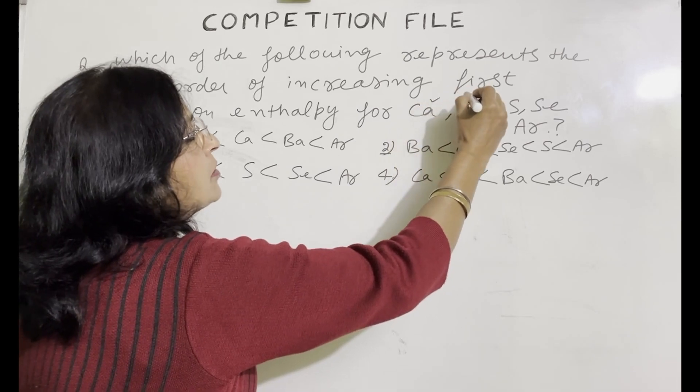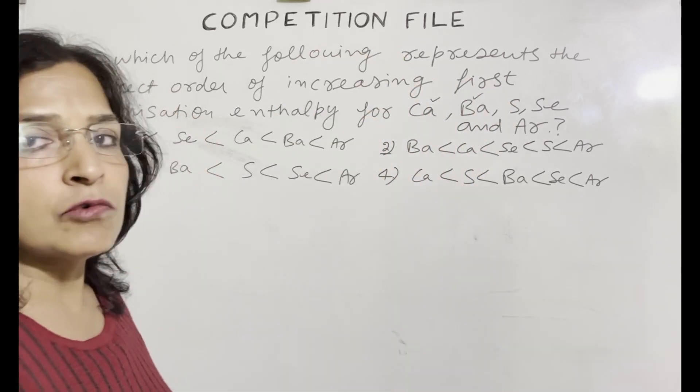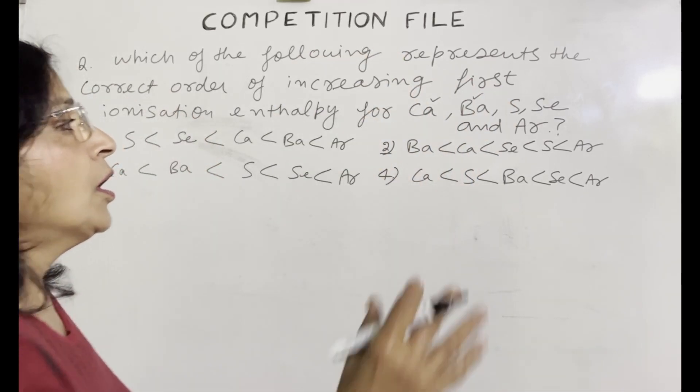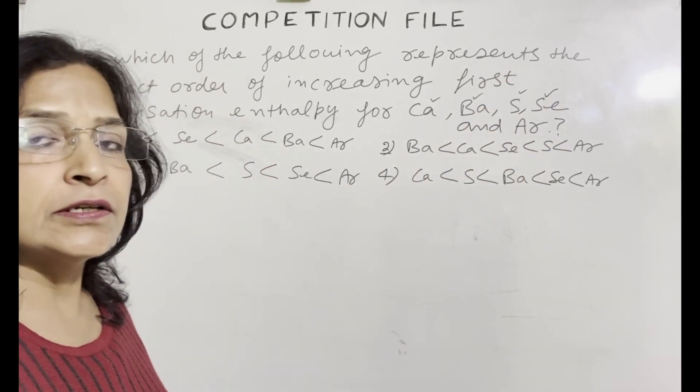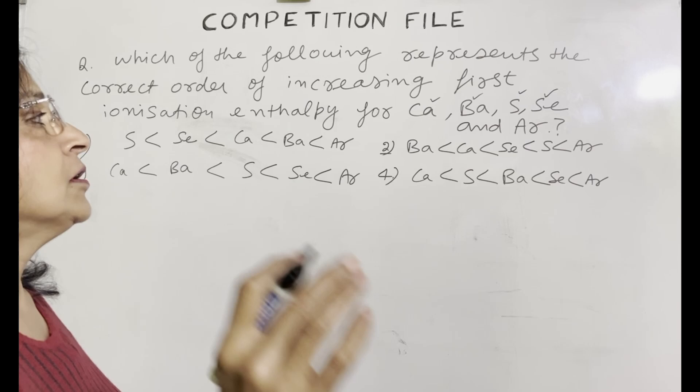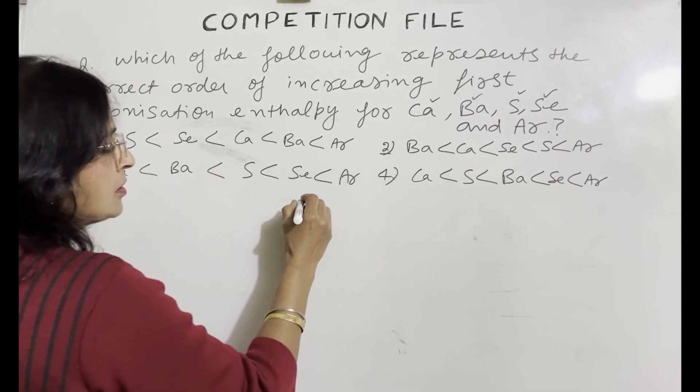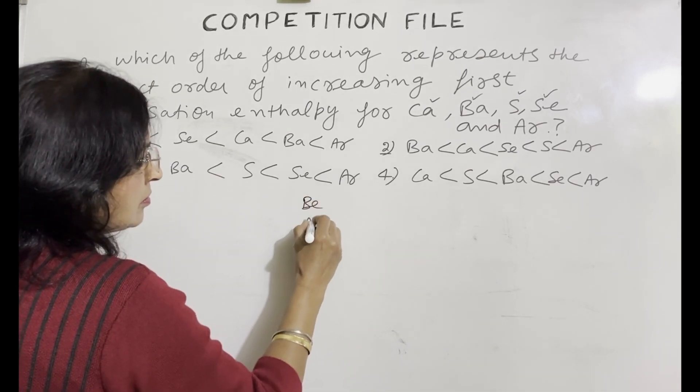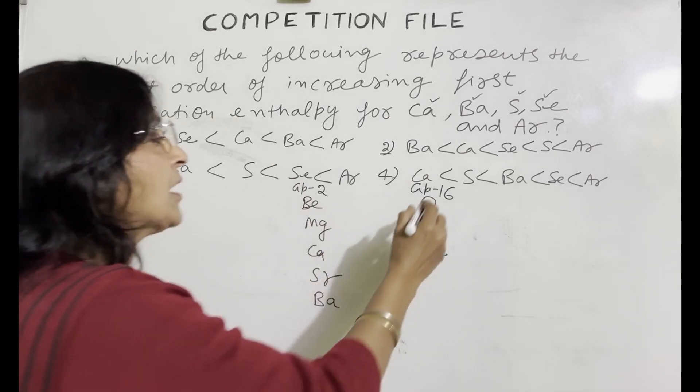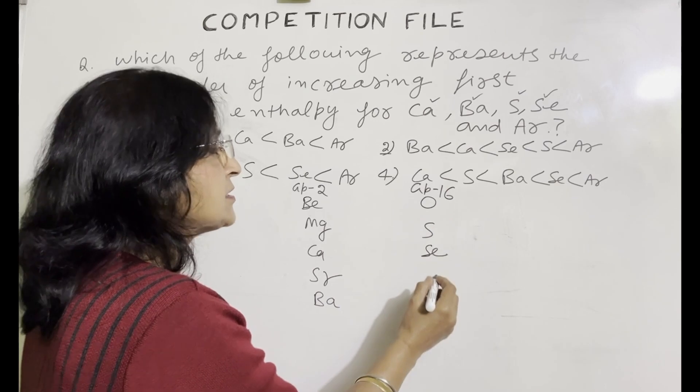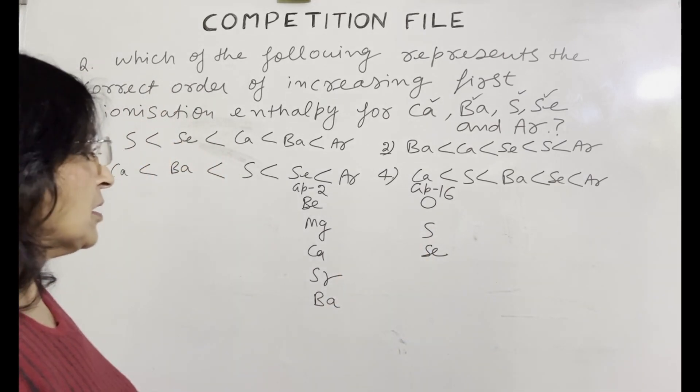Calcium and barium belongs to the same group, that is group 2 and sulfur and selenium belongs to the same group and that is group 16. So group 2, we will write beryllium, magnesium, calcium, strontium, barium and this is group 16, oxygen, sulfur and selenium.